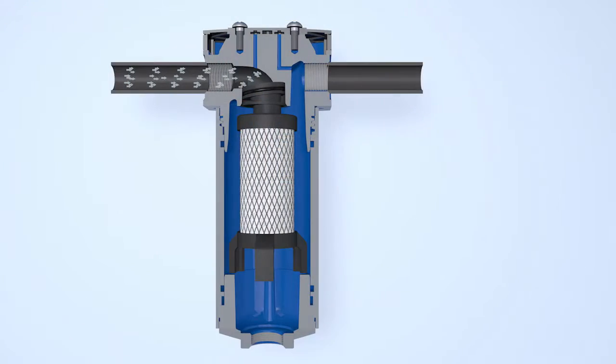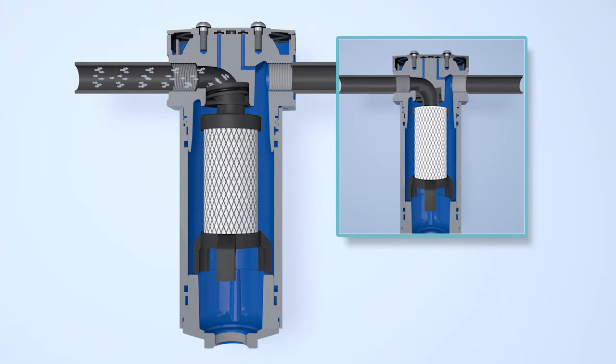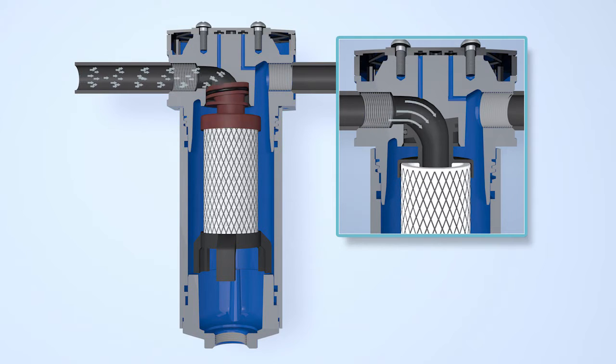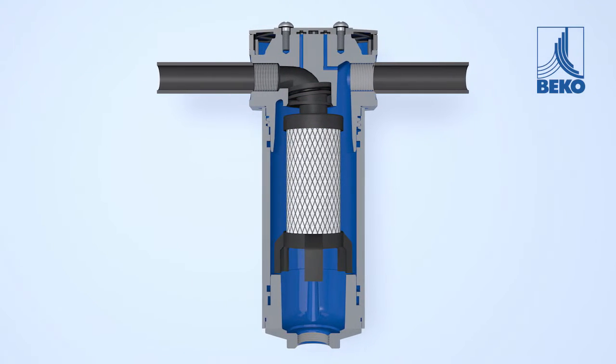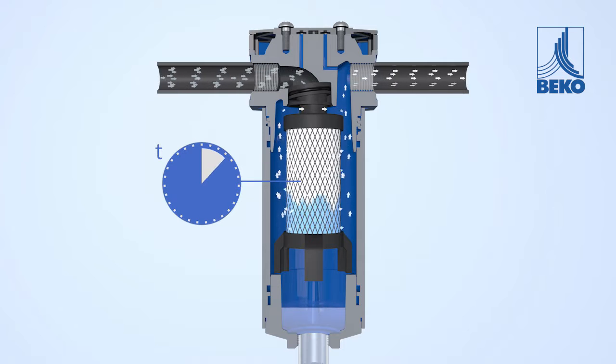The compressed air is passed through to the flow-optimized air intake of the ClearPoint filter housing. The advanced filter medium then uses a series of interlinked processes to retain or extract the impurities.